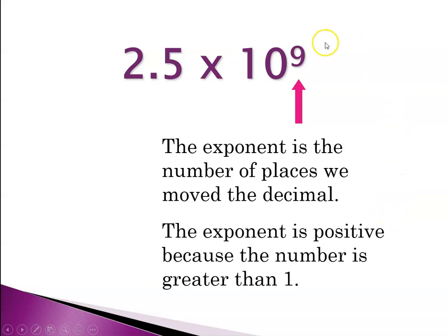And again, in this case, the decimal is a positive number because the number we started with was quite a bit greater than one. So if the power of ten is a positive number, the number that you started with in standard notation was greater than one. And if the power of ten is a negative integer, then the number you started with was less than one.